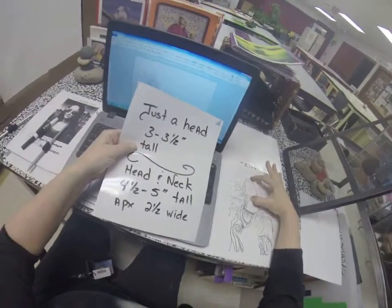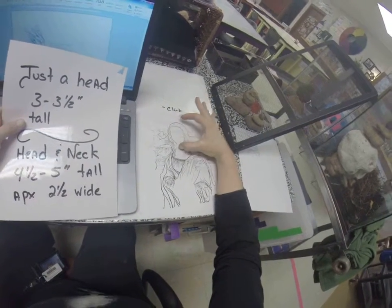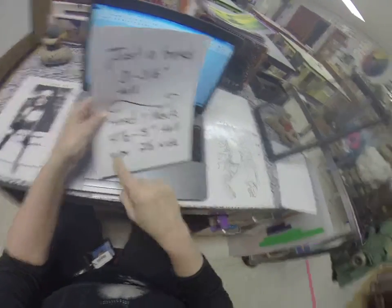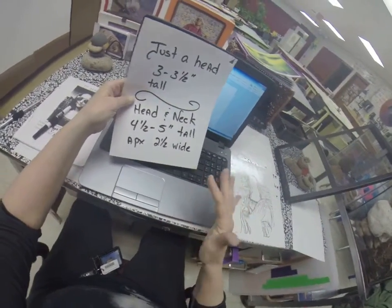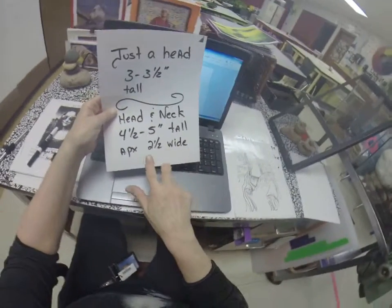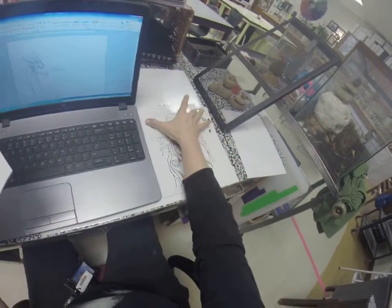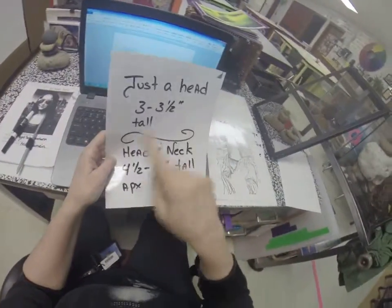The head is about three to three and a half inches, so you could make it a little bit bigger — it would look more like a bobblehead, but that's okay. The head and neck together is more like four and a half to five inches. Give yourself a couple of different sizes: copy and paste a couple of times. It's approximately three and a half inches wide. If something is wide at the top and narrow at the bottom and that's how it's supposed to be, these measurements are not hard and fast.